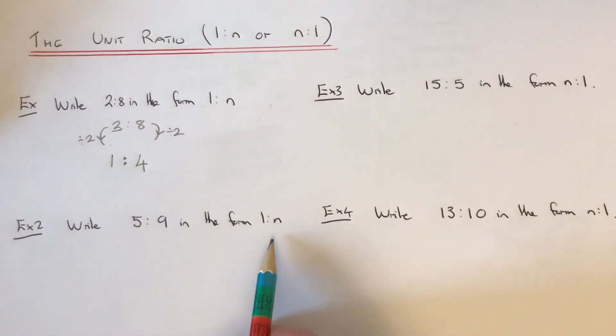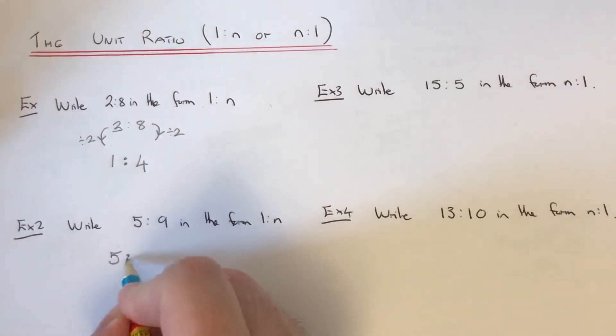So let's move on to the second example. So we've got to write 5 to 9 in the form 1 to N.